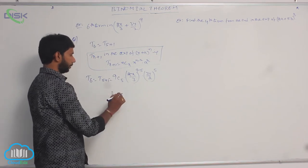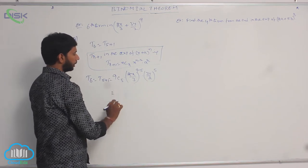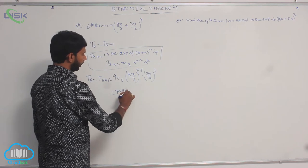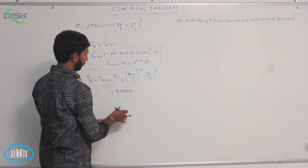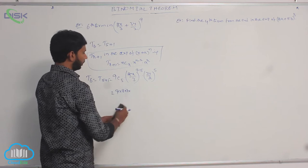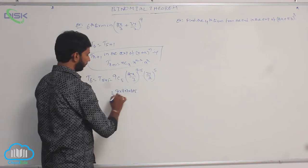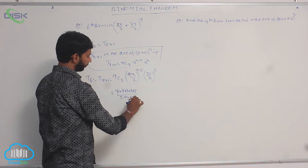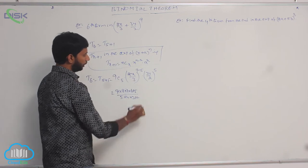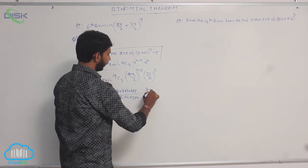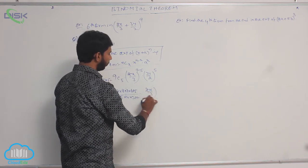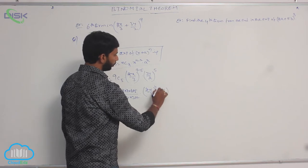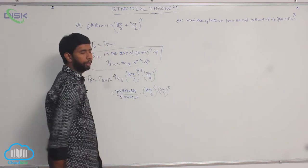This equals 9C5 · (2x/3)^4 · (3y/2)^5. Now, 9C5 = (9 × 8 × 7 × 6 × 5) / (5 × 4 × 3 × 2 × 1), multiplied by (2x/3)^4 and (3y/2)^5.